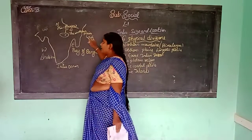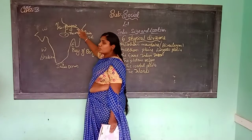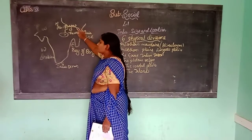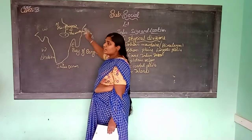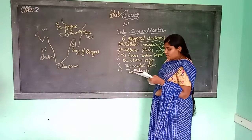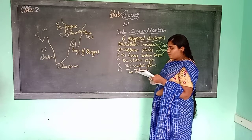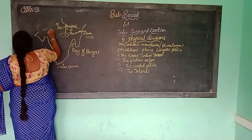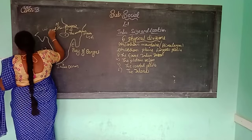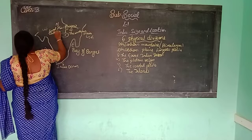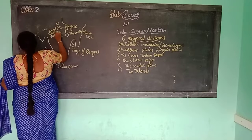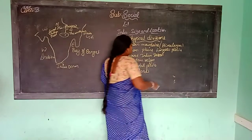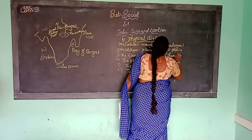The Gangetic Plains are very fertile. Because of the mountains and the water flow, the soil is fertile and supports good vegetation. Next, the western part is the Great Indian Desert.